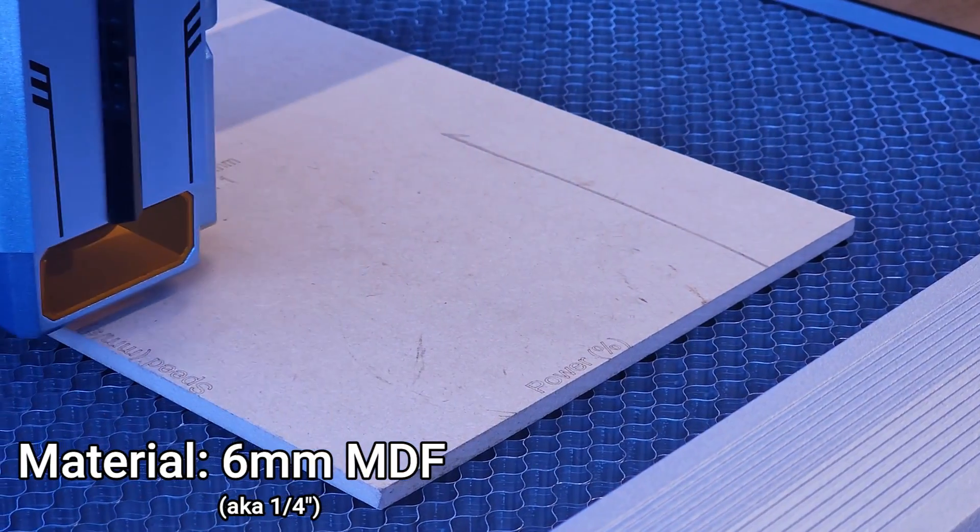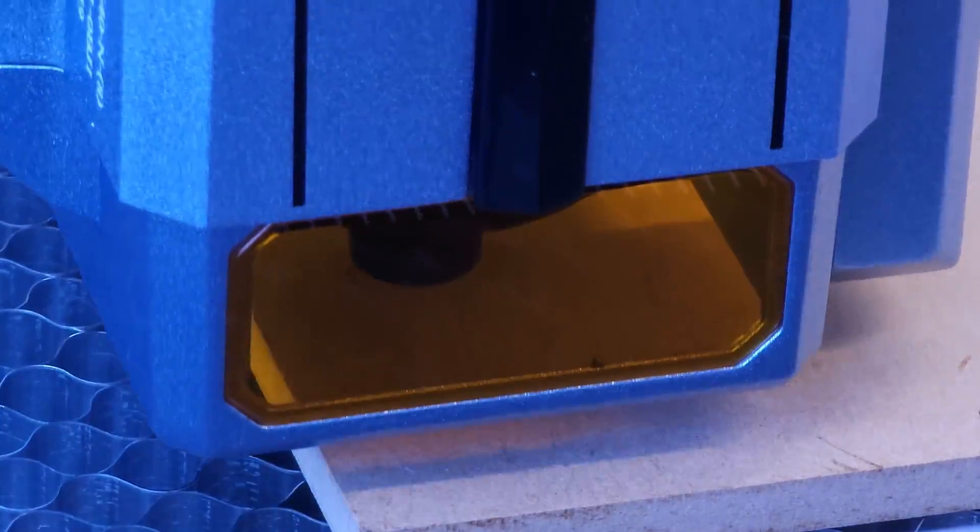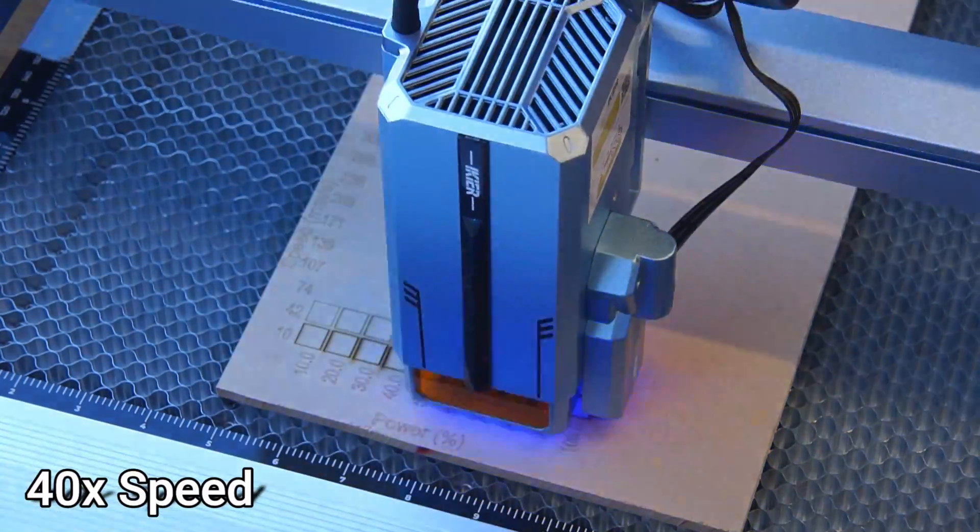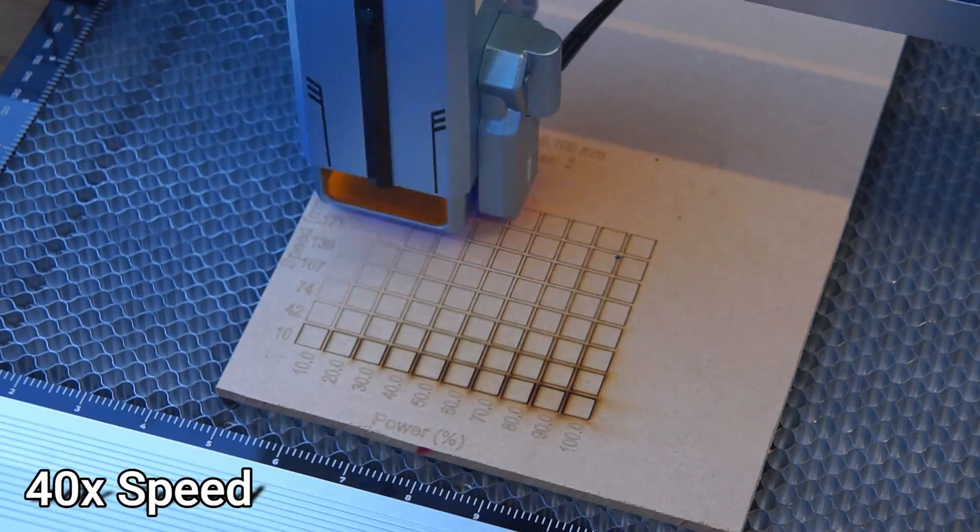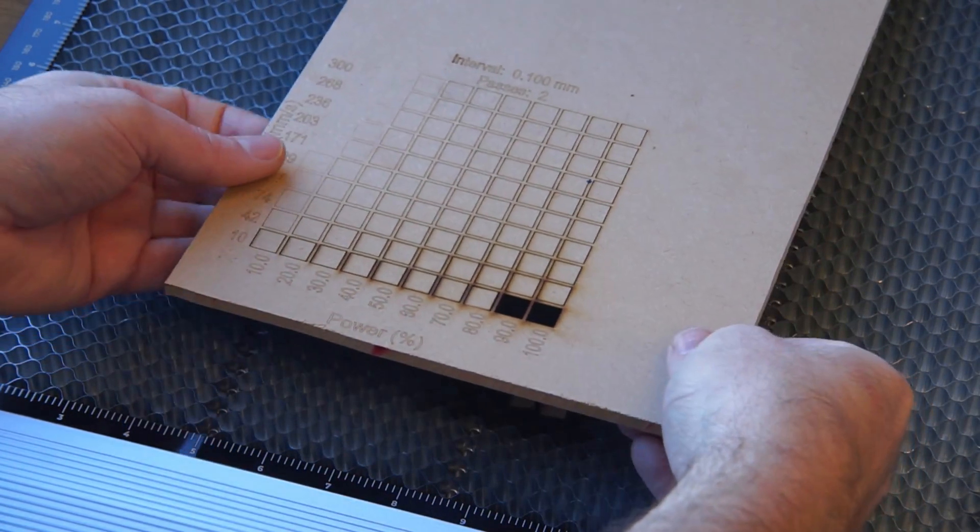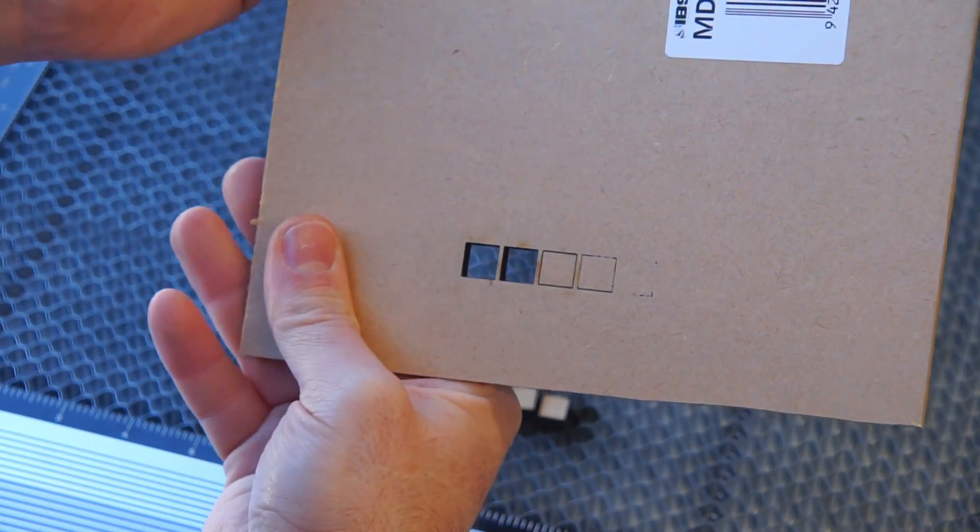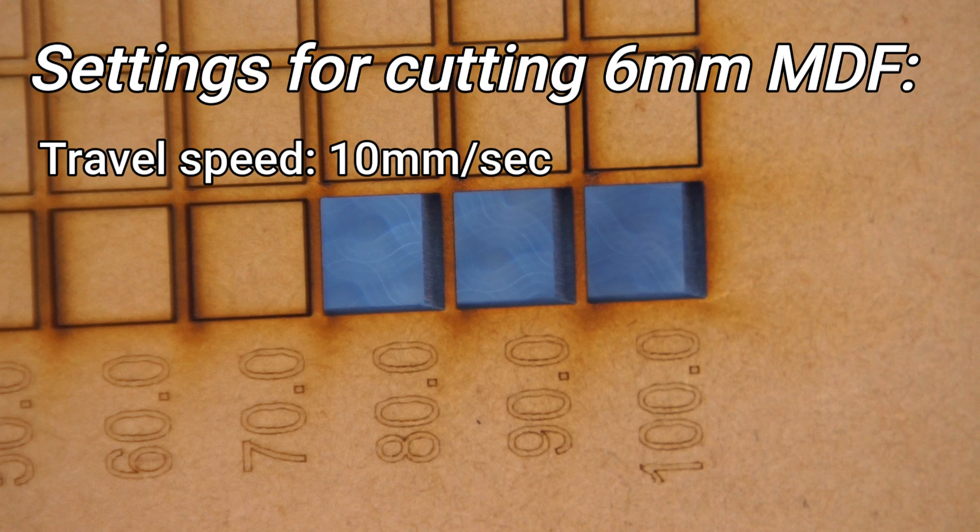I set up a piece of 6mm MDF under the laser and performed a material cut test. After cutting three squares were successfully cut all the way through. Based on these results the optimum settings for cutting 6mm MDF are 10mm a second travel speed, 80-90% power and two passes.